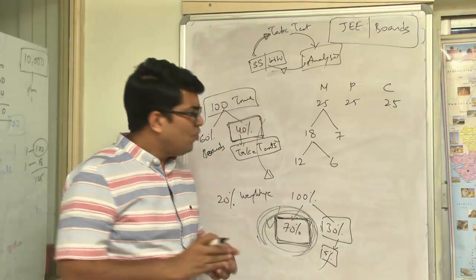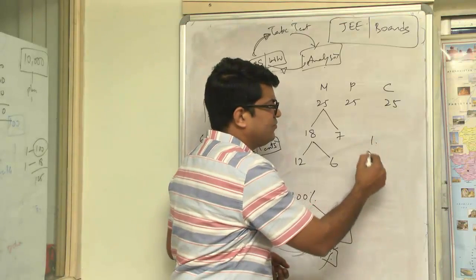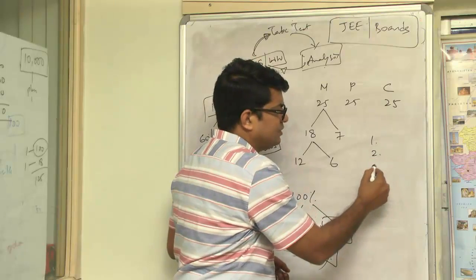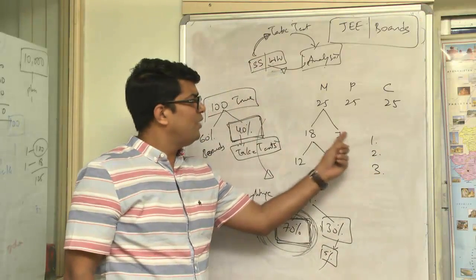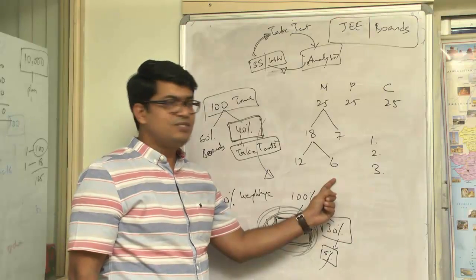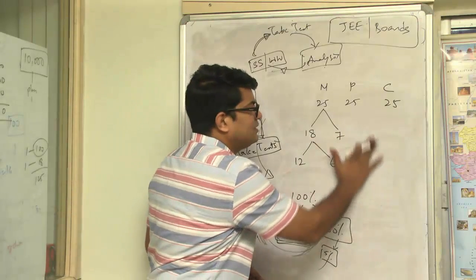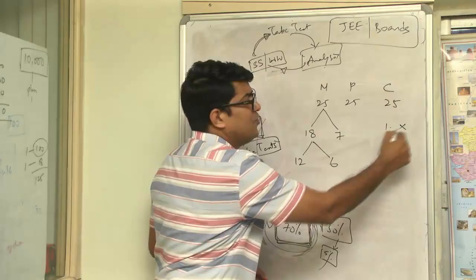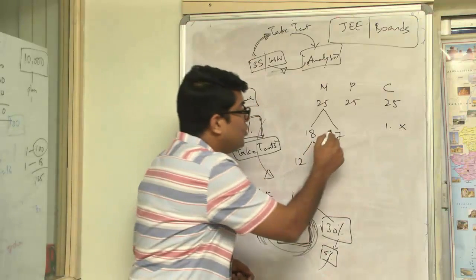Now, how do we analyze? I want you to go question after question, first question, second question, third question. So, each of these questions can fall into any of these categories. Imagine the first category. You know, let's assume you picked up first question and you have not attempted that question. So, not attempted.